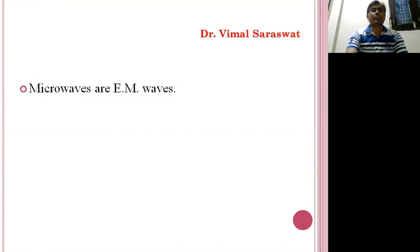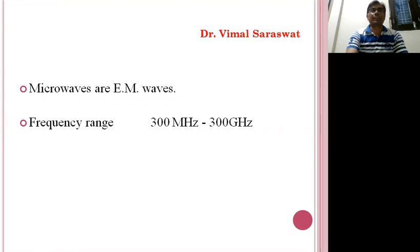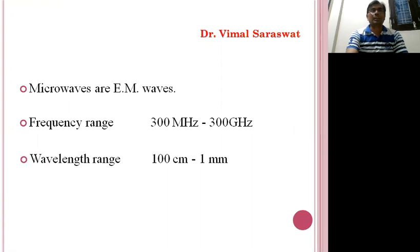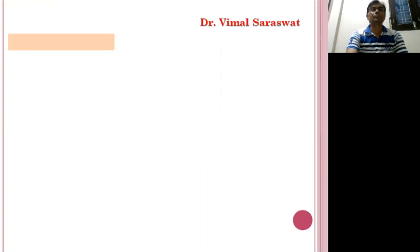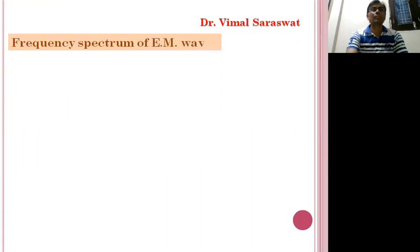Microwaves are actually electromagnetic waves. They range in frequency from 300 MHz to 300 GHz. Wavelength ranges from 100 cm to 1 mm. So microwaves are electromagnetic waves which have a specific frequency range and a specific wavelength range.